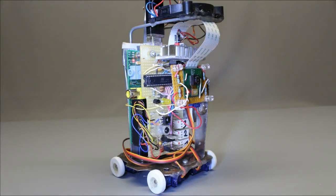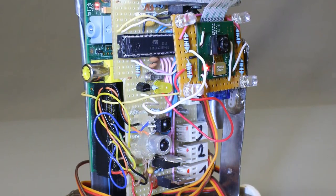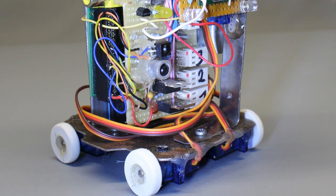One linear regulator with a heatsink and a fan provides the Raspberry Pi and the Arduino with 5V, the second without a heatsink is for the servos.